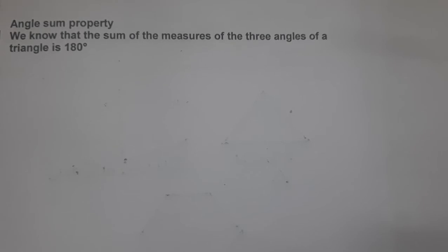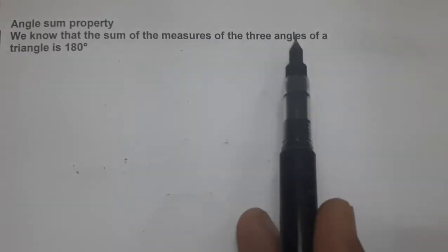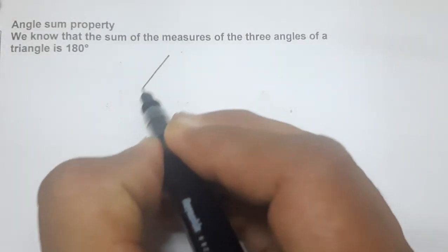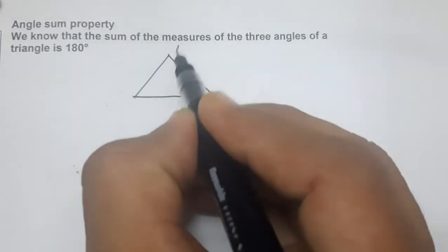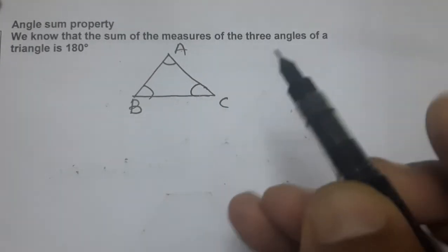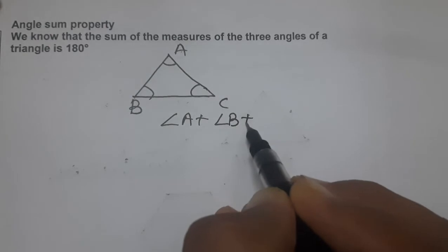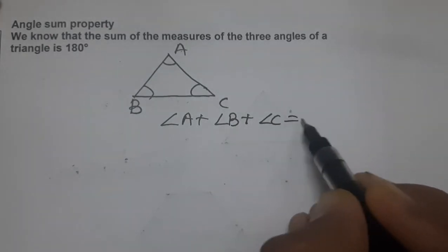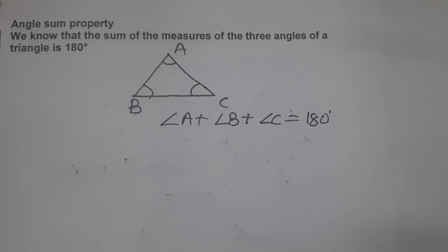From class 7, we know that the sum of three angles of a triangle is 180 degrees. Now, our main focus is quadrilateral. Let us prove that the sum of four angles of a quadrilateral is 360 degrees — the angle sum property of a quadrilateral.